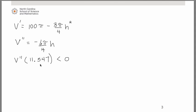We just found that at this particular h value, our second derivative is less than 0, meaning it's concave down. Remember that tells us we have a maximum there. So we'd have the fact that the original function V is concave down at h equals 11.547. Therefore we have a relative maximum.